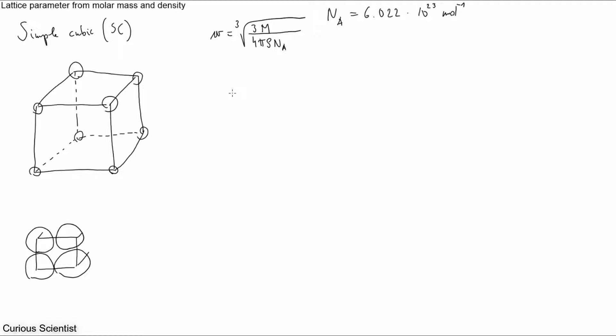It's the radius of the sphere whose volume equals the average volume of an atom in the material. So then we can create a volume. Let's mark it with the capital V.